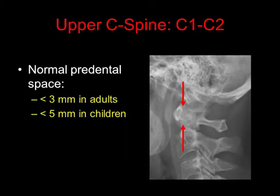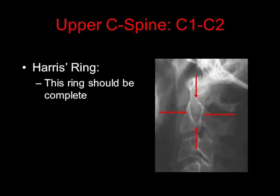The normal pre-dental space is the space between the anterior arch of C1 and the anterior aspect of the dens. This space is less than 3 mm in adults and less than 5 mm in children. Always look at Harris' ring — this is a ring that's superimposed over C2, and it should be complete. If it's incomplete, suspect a fracture.